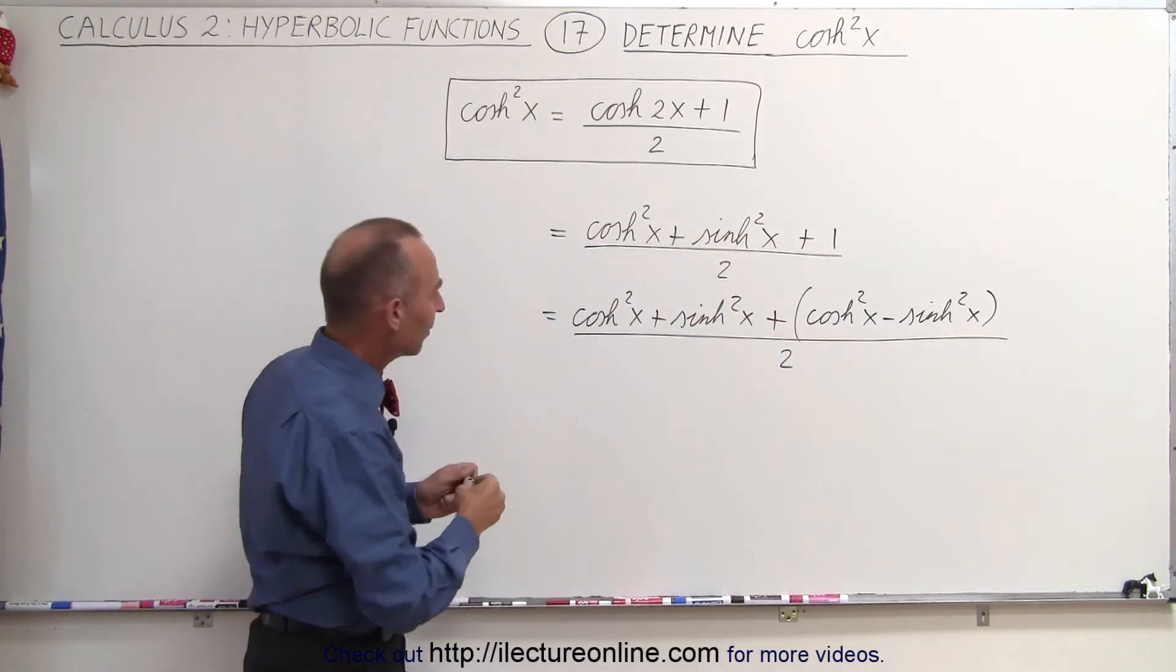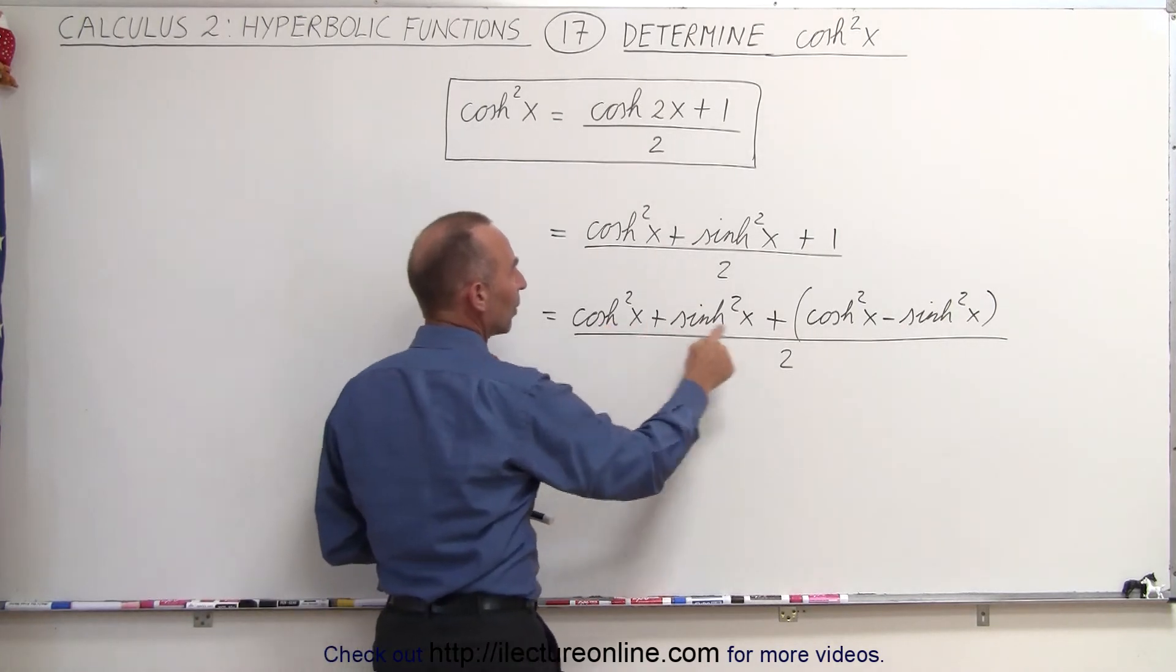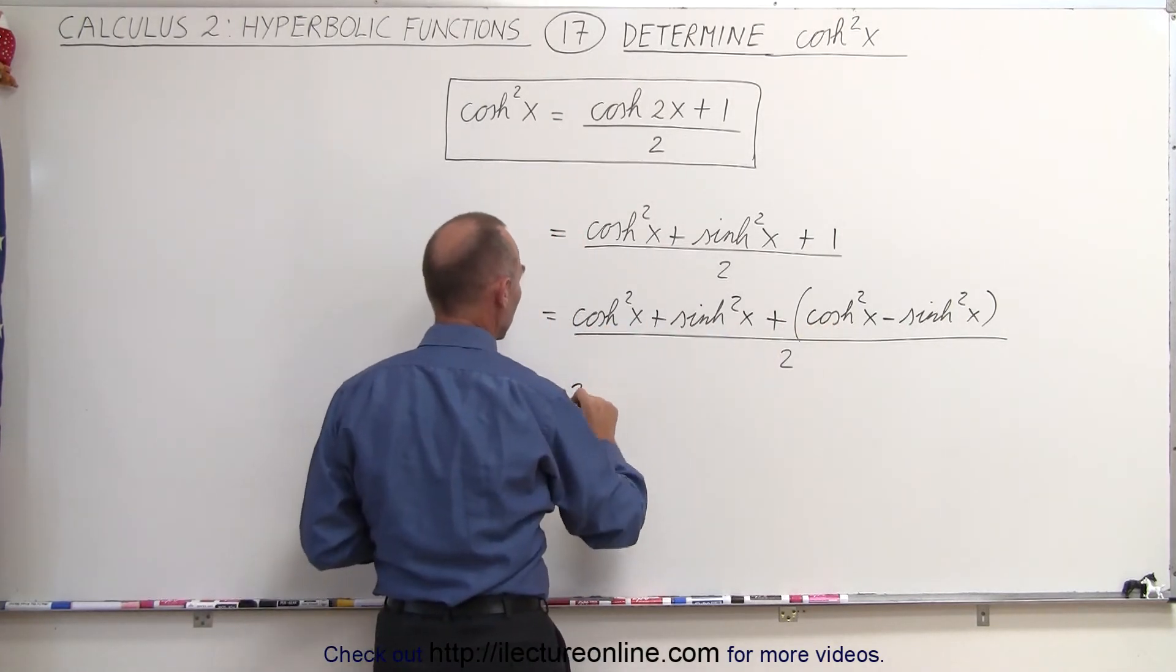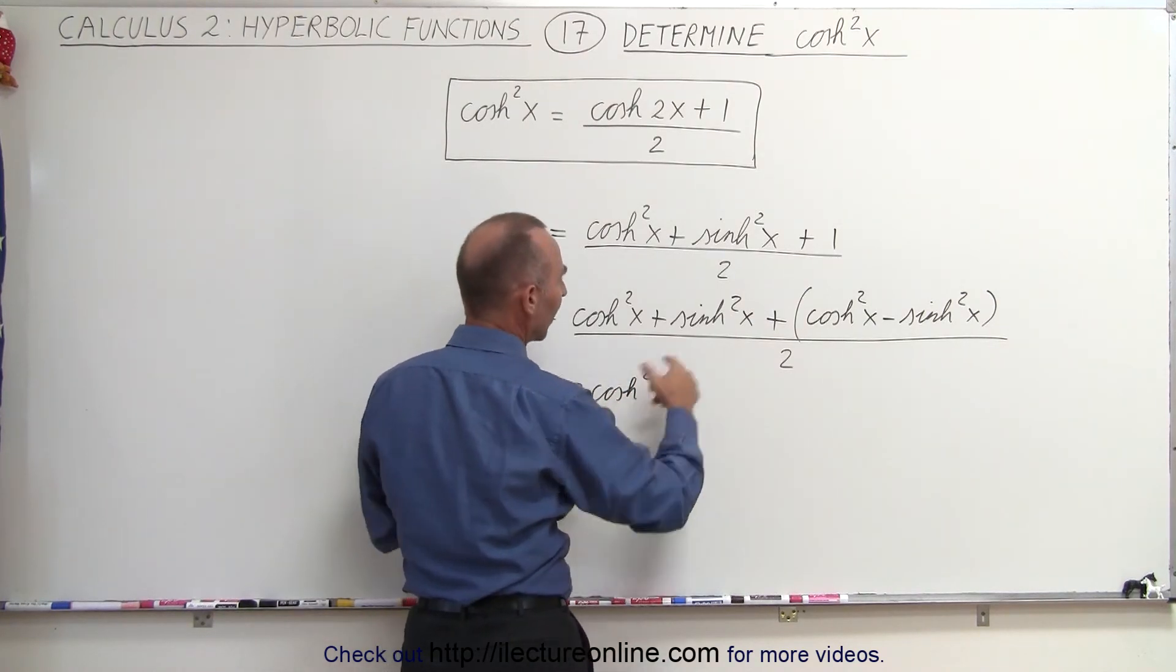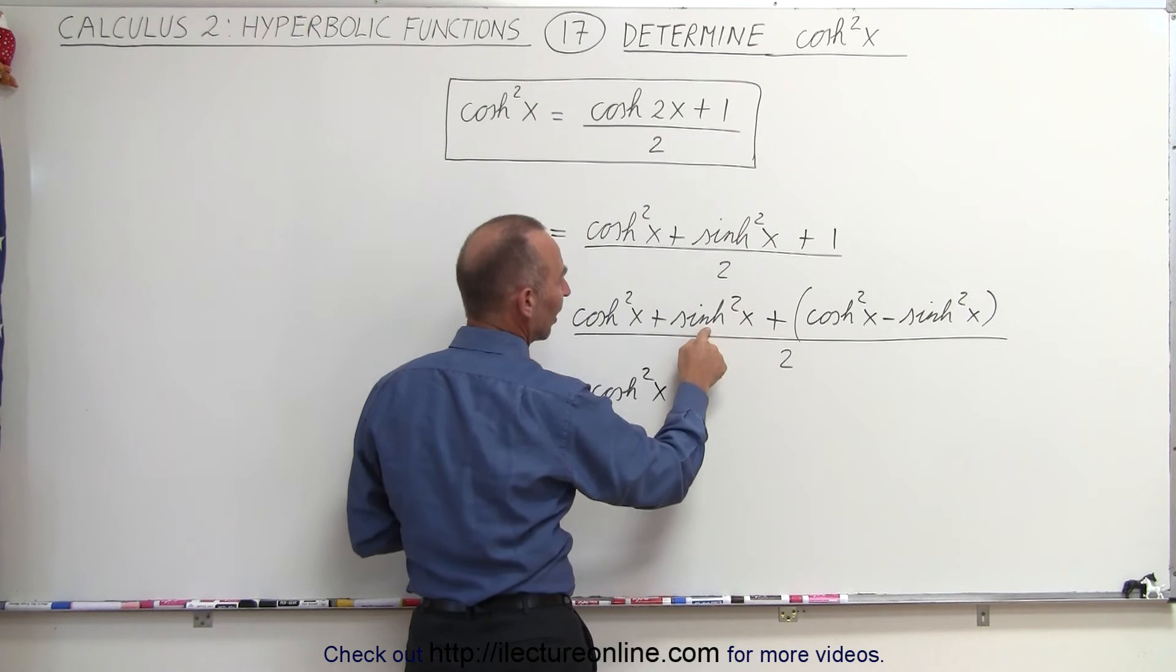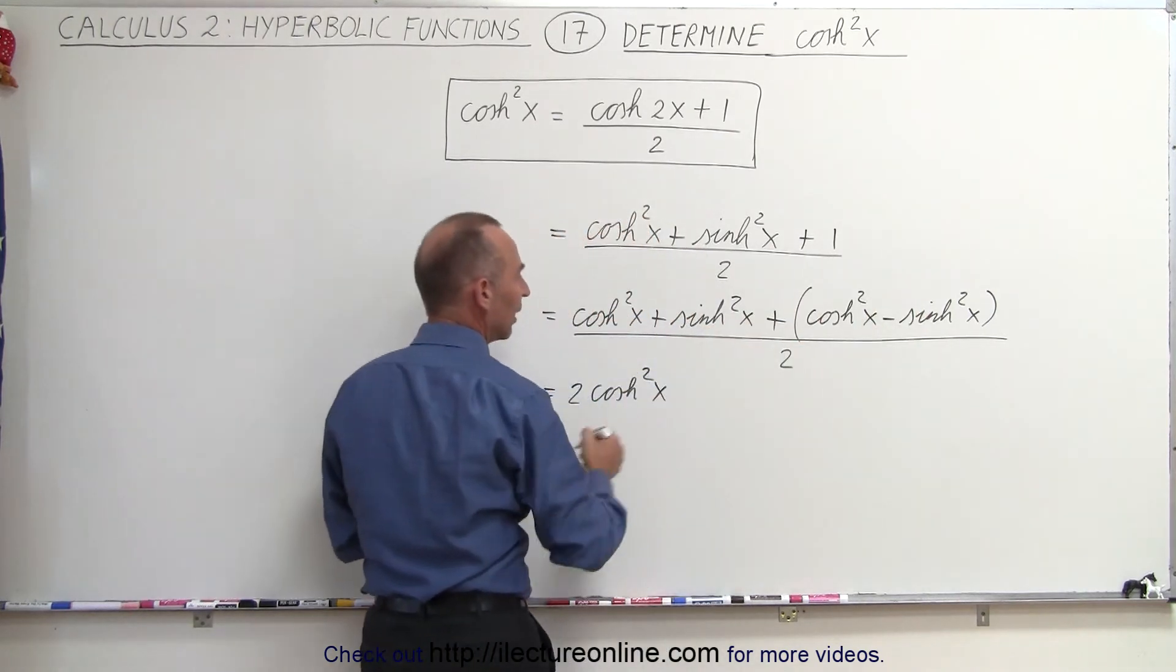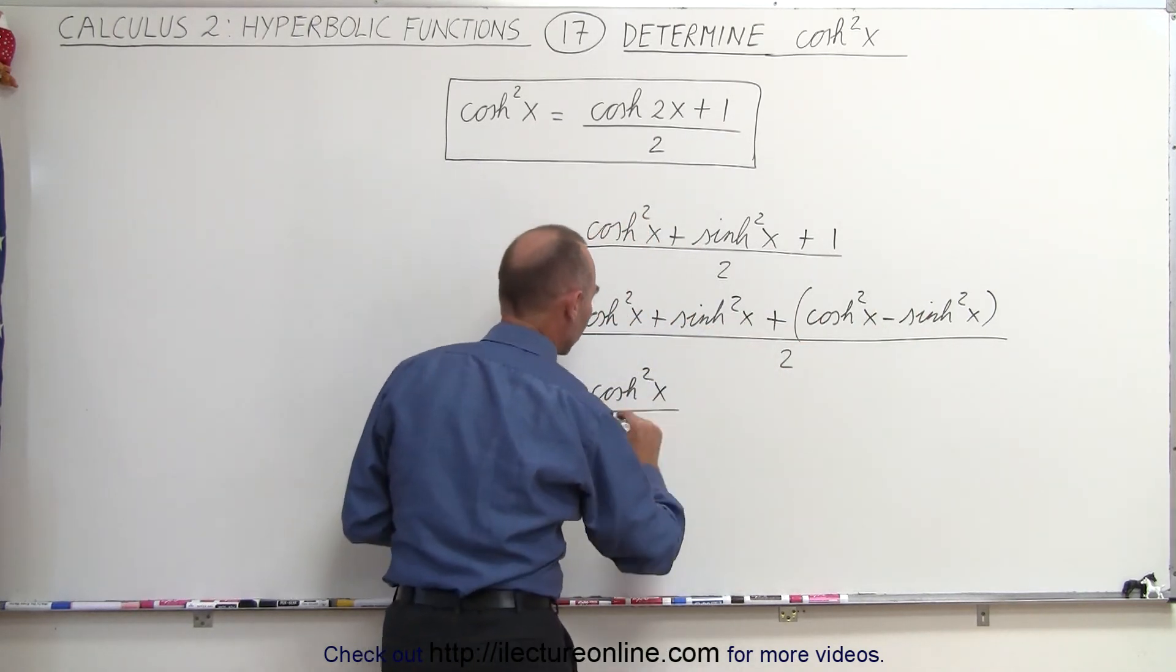Now we can see that we have one of these and one of these. When we add them together, we end up with 2 times the hyperbolic cosine squared of x. But the hyperbolic sine squared of x terms—here that's a plus and this is a minus—cancel out, and we still have divided by 2.